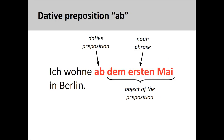The preposition 'Ab' can be used to indicate the point in time after which a certain activity starts. For example, 'Ich wohne ab dem ersten Mai in Berlin' — I am living in Berlin starting the 1st of May. In this and all following slides, I will indicate both the dative preposition and the object of this preposition, both of which make the dative prepositional phrase.